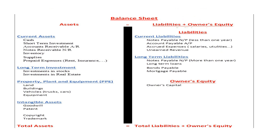Assets, liabilities, and owner's equity are classified as follows. Under current assets: cash, short-term investment, accounts receivable, notes receivable, inventory, supplies, and prepaid expenses such as prepaid rent and prepaid insurance. Under long-term investments: investment in stock and investment in real estate. Under property, plant, and equipment (PPE): land, buildings, vehicles, and equipment. Under intangible assets: goodwill, patent, copyright, and trademark.